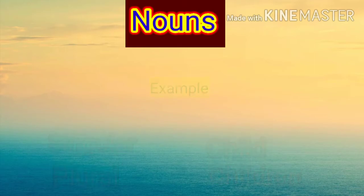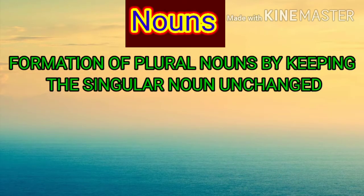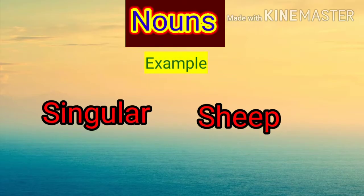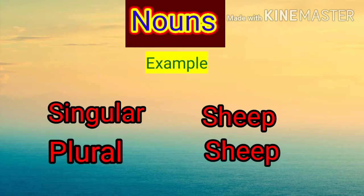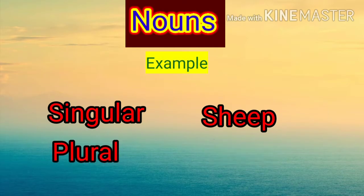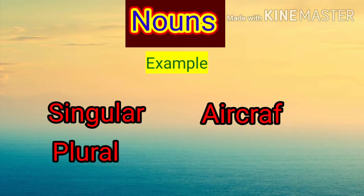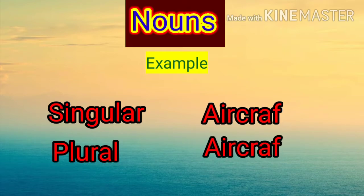Next heading: formation of plural nouns by keeping the singular noun unchanged. Some nouns remain unchanged in the singular and plural form. For example: sheep — plural will be sheep; deer — plural will be deer; aircraft — plural will be aircraft.